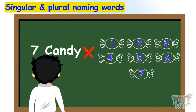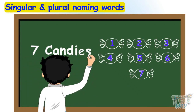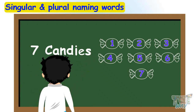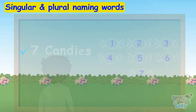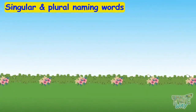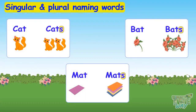No, it's not right. What is wrong here? You need to write 7 candies instead of 7 candy. Because when you have more than one object, you write its plural naming word. So kids, every noun or naming word has a different singular and plural form.